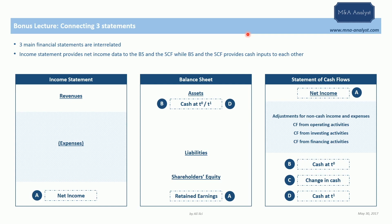Now let's focus on how these three financial statements are interrelated. We're going to start with the income statement, and our focus will be on letter A. We have given the letter A to the income statement. The income statement illustrates the profitability of a company.